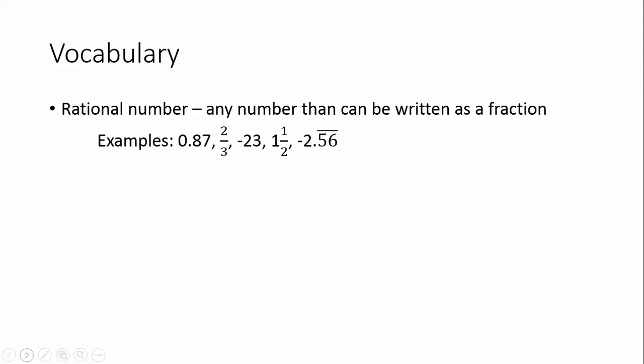The definition for today is a rational number. And a rational number is any number that can be written as a fraction. And please write the examples here, because we're going to talk about each one of these. But a terminating decimal is what you see first. That's that 0.87. This is a terminating decimal.